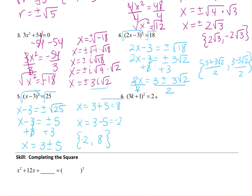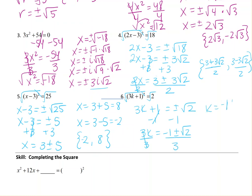For problem 6, we have 3k plus 1 squared equals 2. Taking the square root of both sides gives 3k plus 1 equals plus or minus square root of 2. Subtracting 1 from both sides: 3k equals negative 1 plus or minus square root of 2. Dividing by 3: k equals (negative 1 plus or minus square root of 2) over 3. This cannot simplify further. The solution set contains (negative 1 plus square root of 2) over 3 and (negative 1 minus square root of 2) over 3.